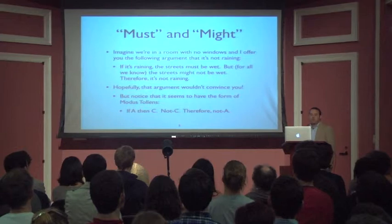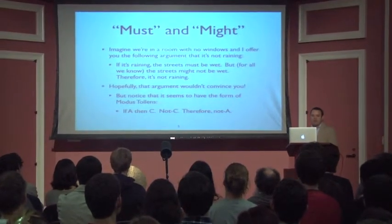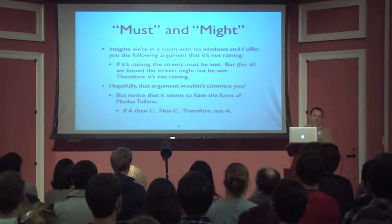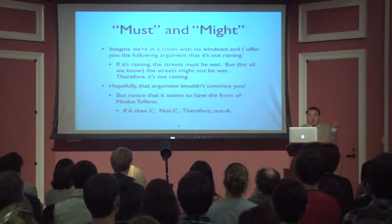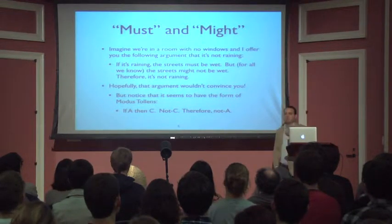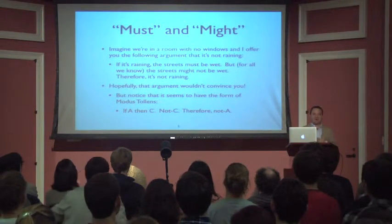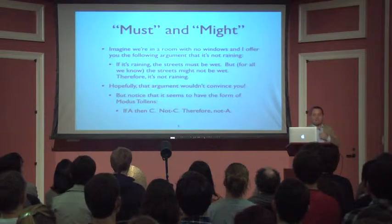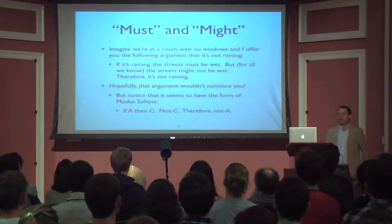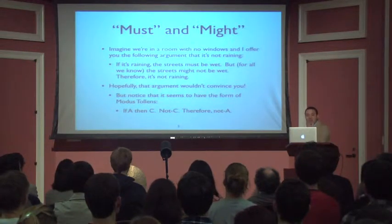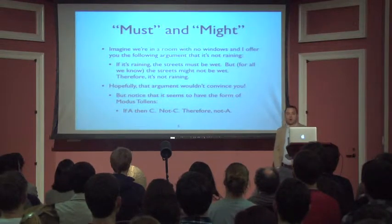Let me give you a few examples. Imagine we're in a room with no windows and we don't know whether it's raining out, and I offer you the following argument that it's not raining. I say, look: if it's raining, the streets must be wet. But for all I know, the streets might not be wet — after all, I can't see out the windows. Therefore, it's not raining. That argument shouldn't persuade anyone. But notice that this inference obeys the form of modus tollens: if A, then C; not C; therefore not A. So this looks like a kind of conditional that's misbehaving by violating our modus tollens rule.